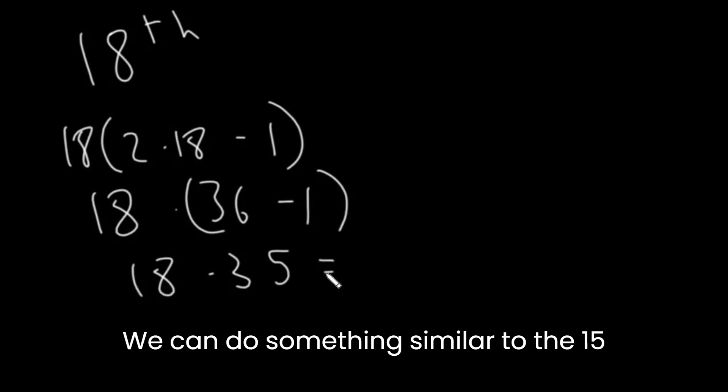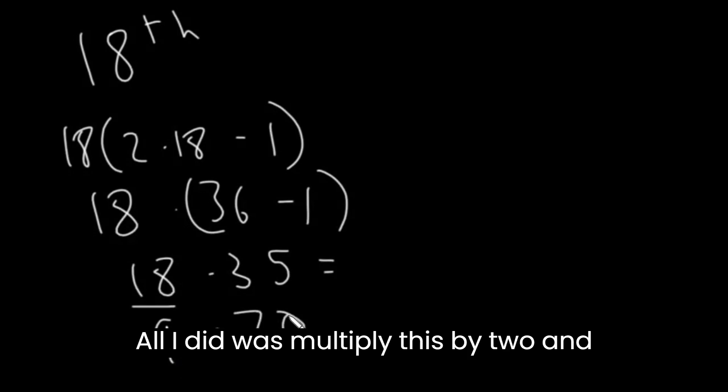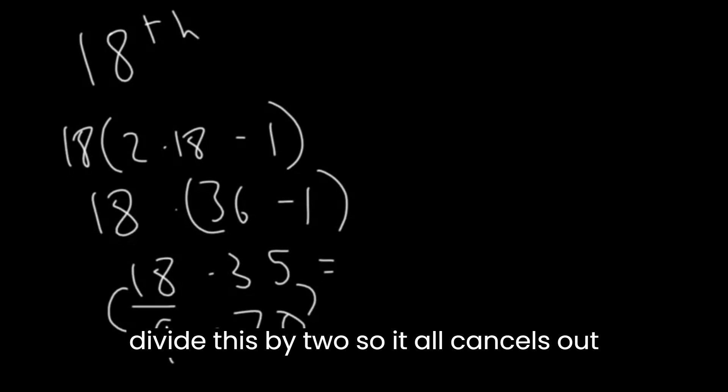We can do something similar to the 15 trick. We can make the 18 into a 9, and we can make the 35 into a 70. All I did was multiply this by 2 and divide this by 2, so it all cancels out. 9 times 70 is 630.